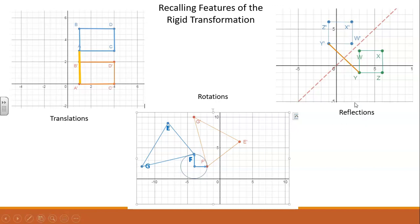In a reflection, the line of reflection is the perpendicular bisector of the segments that are created when you connect the image and pre-image points.